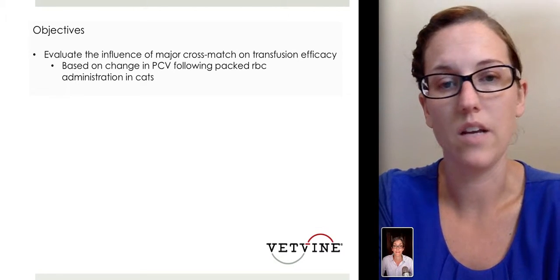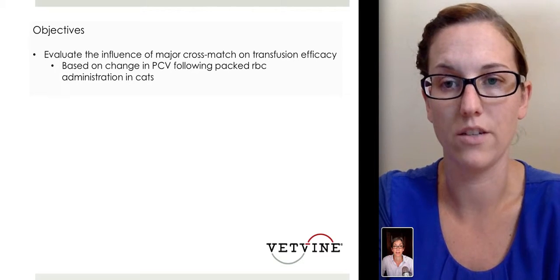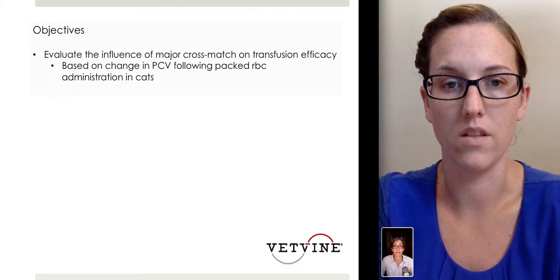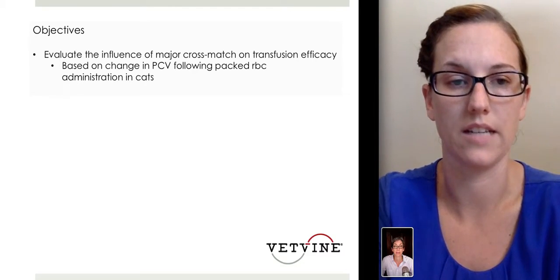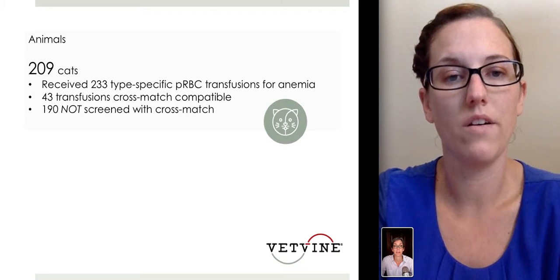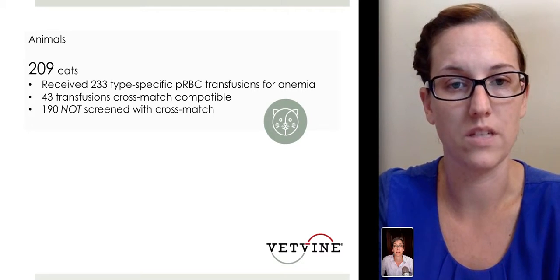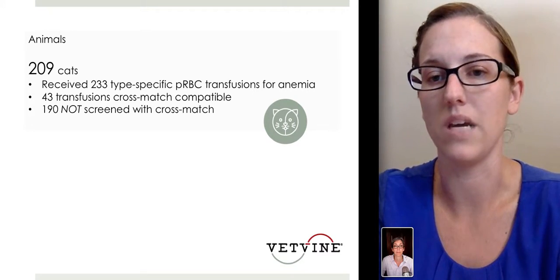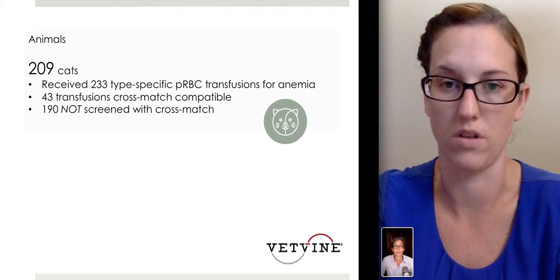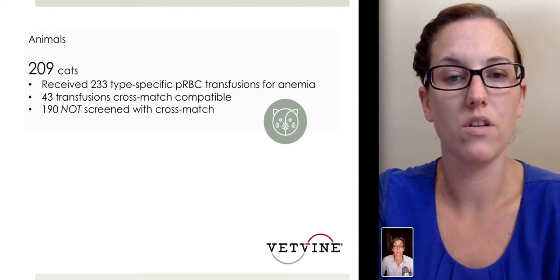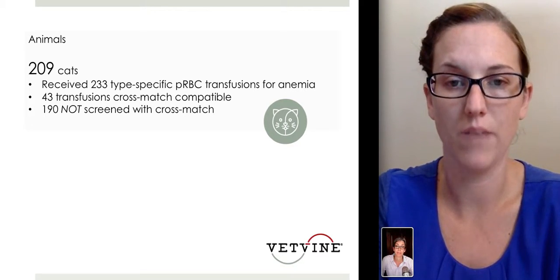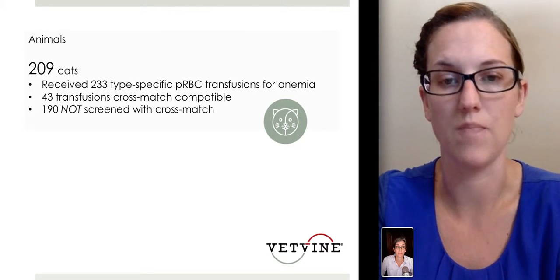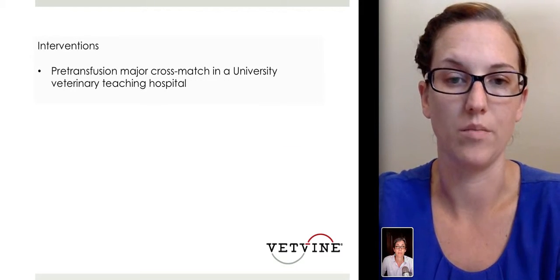The objective of this study was to evaluate the influence of the major cross-match on transfusion efficacy, mainly based on the change in PCV following transfusion of packed red blood cells to cats. There were 209 total cats evaluated receiving 233 transfusions for anemia of various reasons — the main ones being blood loss and hemolytic causes. 43 of the transfusions were cross-match compatible, and 190 were not screened for cross-match.